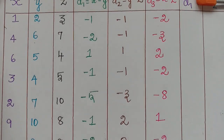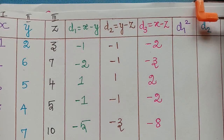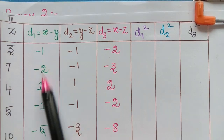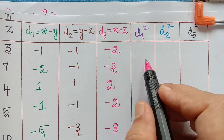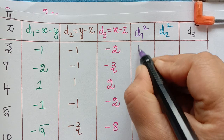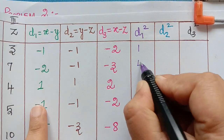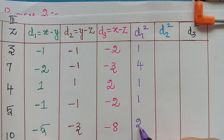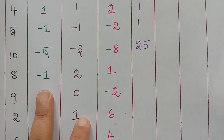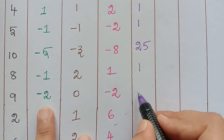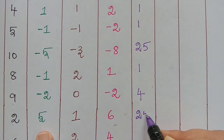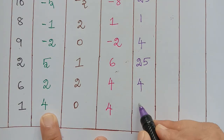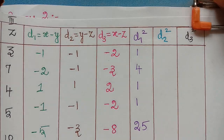After finding d3, we compute the squares. For d1 squared: (-1)²=1; (-2)²=4; 1²=1; (-1)²=1; (-5)²=25; (-1)²=1; (-2)²=4; 5²=25; 2²=4; and 4²=16. These are all the d1 squared values.